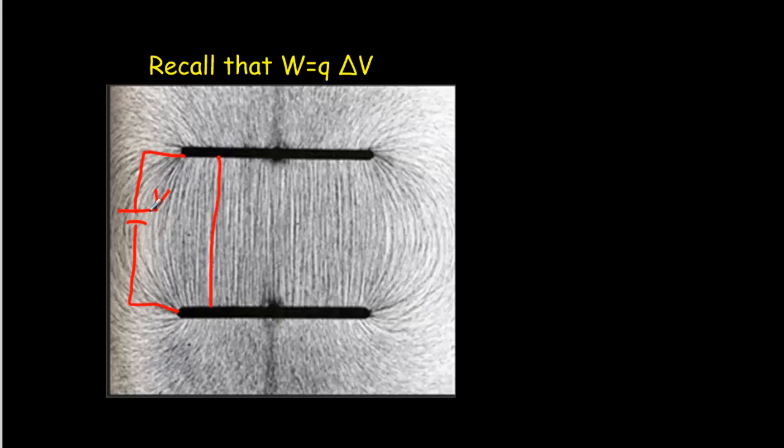The electric field would point from the positive side of the battery to the negative side of the battery, and we'd get this uniform electric field inside the plates.